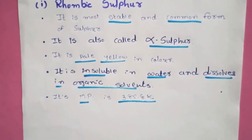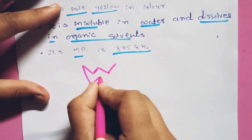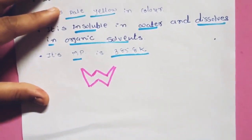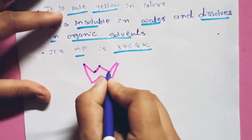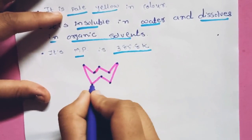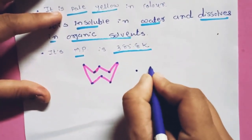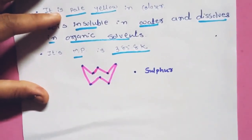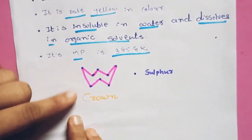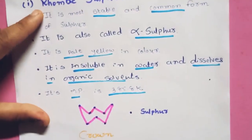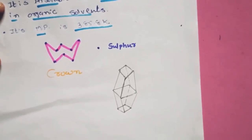If you look at the structure of rhombic sulfur, it has a crown-like shape. You can draw it as a crown structure. In this crown structure, there are eight corners and at each corner a sulfur atom is arranged — so the structure of rhombic sulfur is a crown-like structure with eight sulfur atoms.